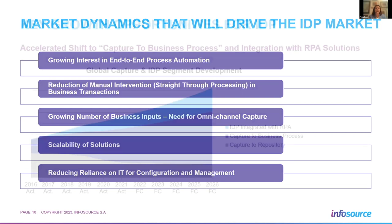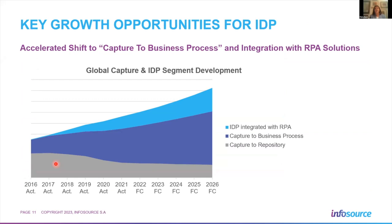Looking at data: capture to repository, the primary reason for capture being focused on records management, shows a significant decline during the pandemic, with significant growth in anything bundled as capture to business process. We're seeing IDP integrated with RPA — a growing convergence of these two. We would argue that IDP in the narrow sense represents these two upper areas of capture activity.